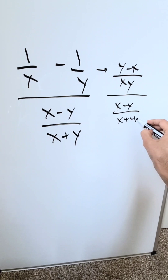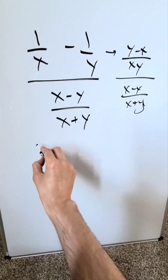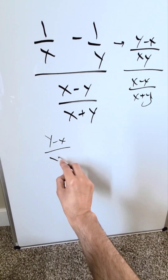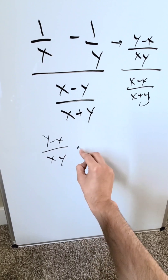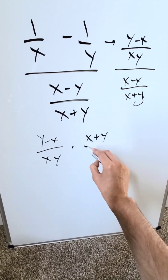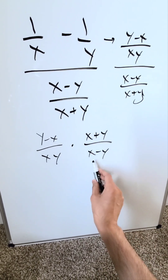You will flip this entire fraction around. We will be looking at y minus x over xy, times x plus y over x minus y.